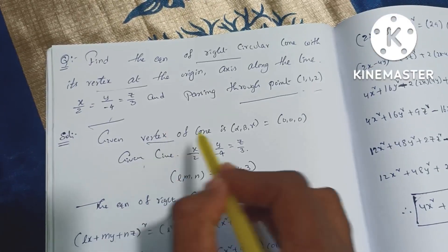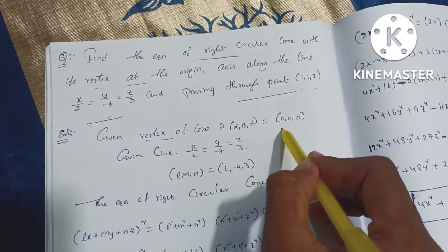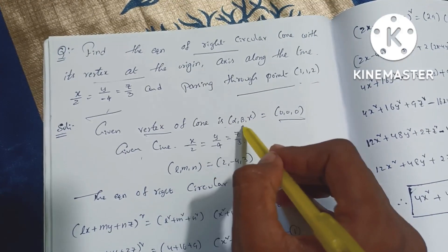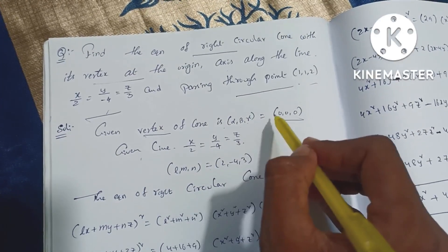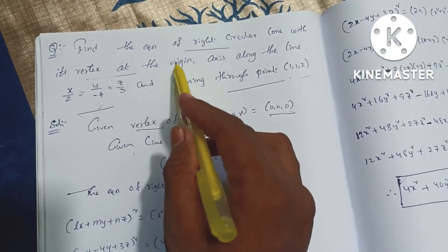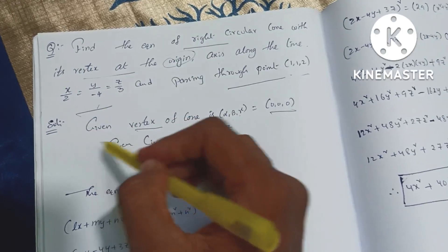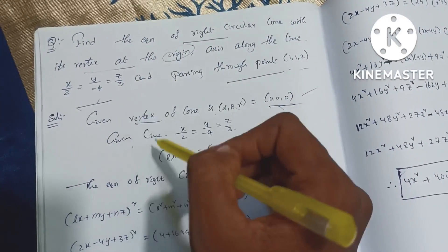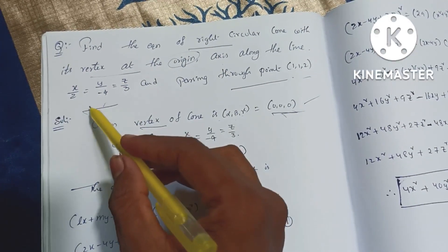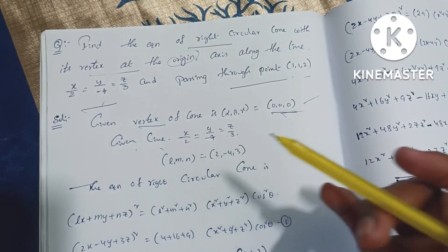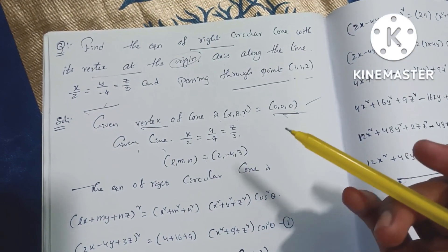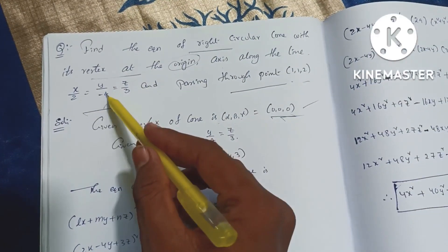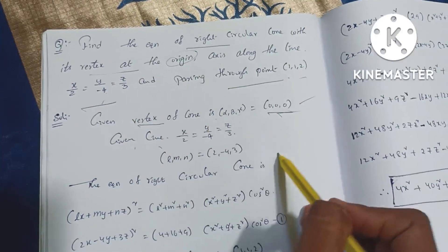Given: vertex of the cone — we can show the vertex as (alpha, beta, gamma) is equal to origin (0, 0, 0). The given line equation has direction ratios L, M, N equal to 2, minus 4, and 3 respectively.